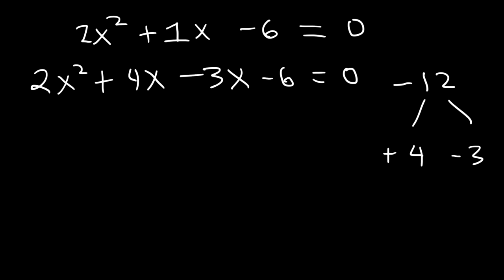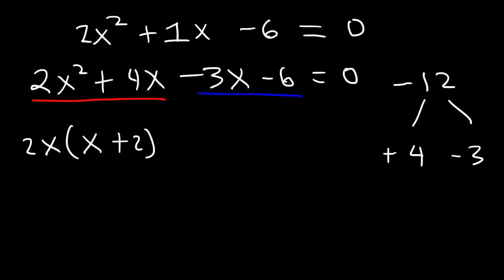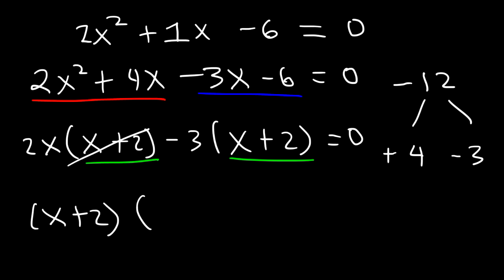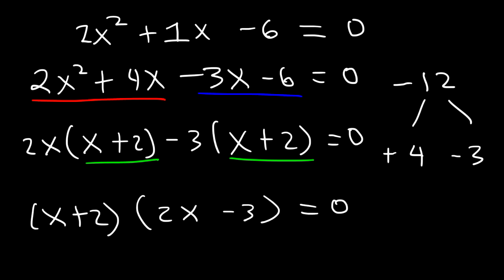Now we need to do something called factoring by grouping. In the first two terms, take out the GCF, which is 2x: 2x squared divided by 2x is x, and 4x divided by 2x is 2. In the last two terms, take out the GCF, which is negative 3: negative 3x divided by negative 3 is x, and negative 6 divided by negative 3 is positive 2. Next, factor out the GCF again, which is x plus 2. Removing x plus 2 from the first group leaves 2x, and removing it from the second group leaves negative 3. This factor leads to x equals negative 2, and setting 2x minus 3 equal to zero gives x equals 3 over 2.